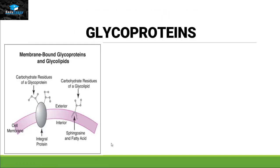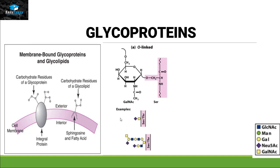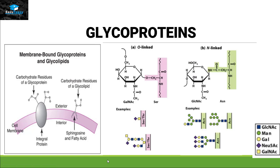Glycoproteins: a glycoprotein is a protein with a non-protein carbohydrate part attached to it. There are two types of linkage. One is O-linkage, which occurs on serine and threonine amino acids — carbohydrates such as mannose, galactose, and glucose can be attached this way, as shown in the picture. The other type is N-linkage, which usually occurs on asparagine.